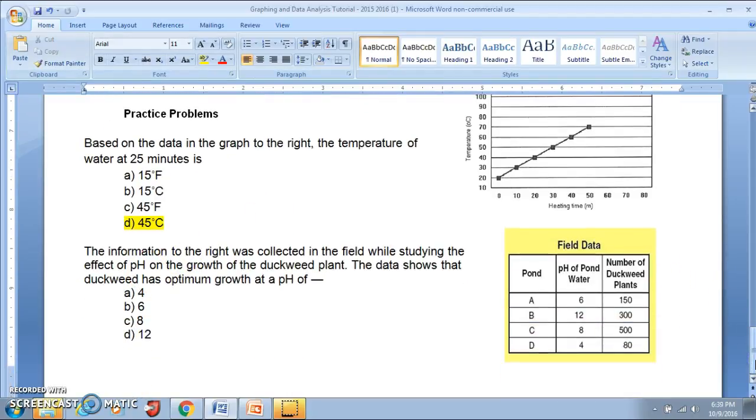For our next problem, they tell us the information to the right was collected in the field while studying the effect of pH on the growth of the duckweed plant. The data shows that duckweed has an optimum growth at a pH of, so I've read my question. I'm looking for the pH where duckweed has its best or highest growth.